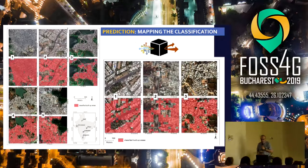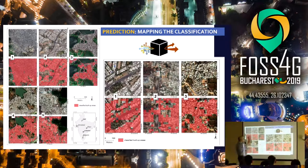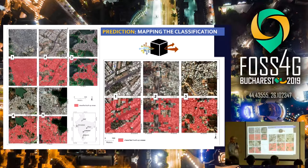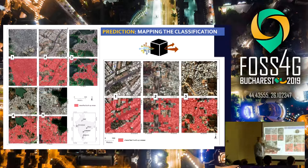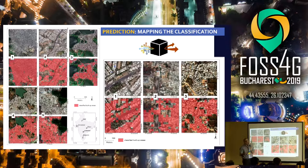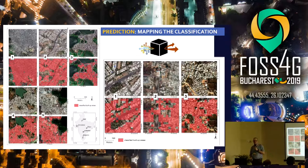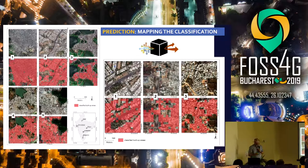We also mapped all the built-up land cover in the country. You can see the boundaries of the cities, and when you zoom in, you can see that even with Landsat, the free 30-meter resolution, we are able to detect the fine boundaries between built-up land cover and vegetation in the surrounding area.